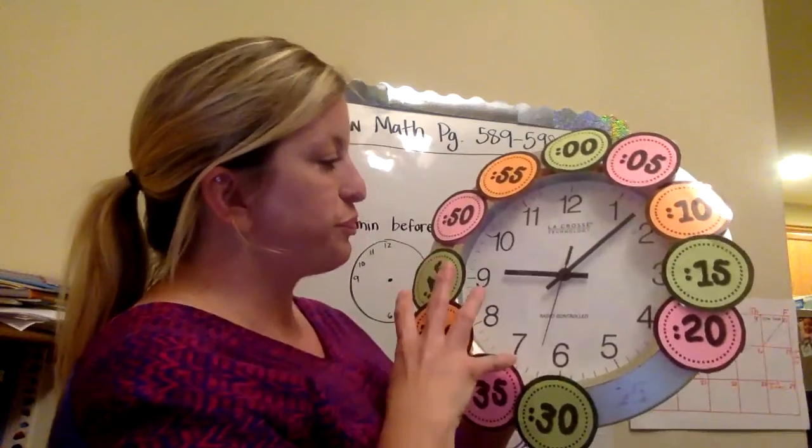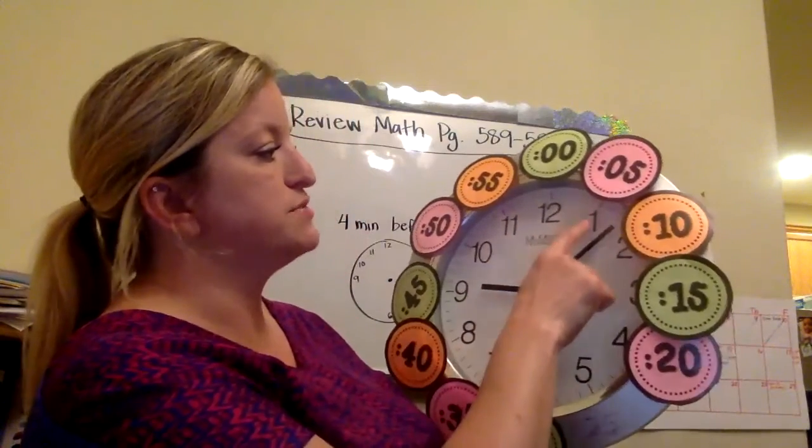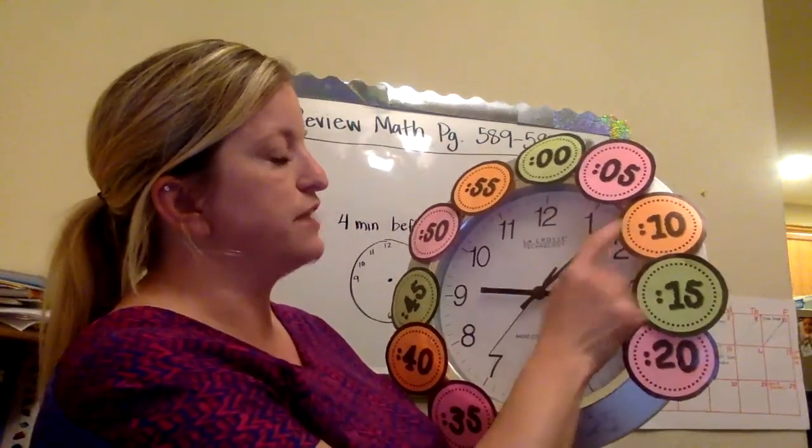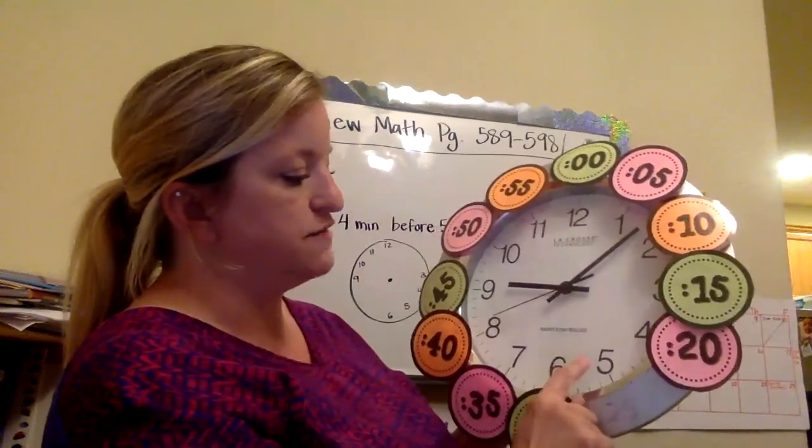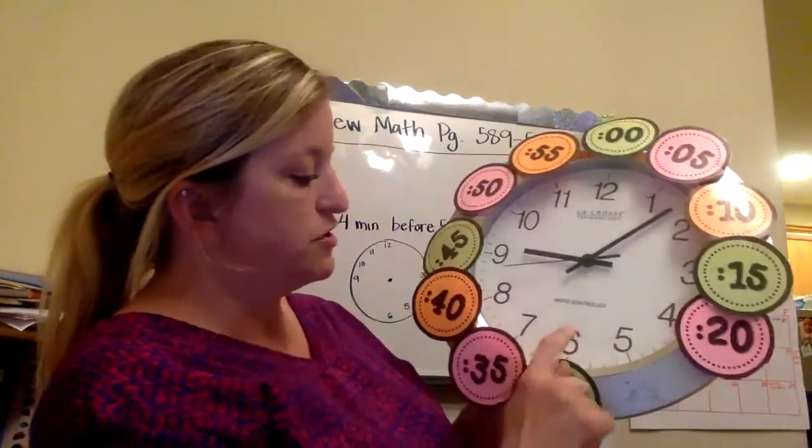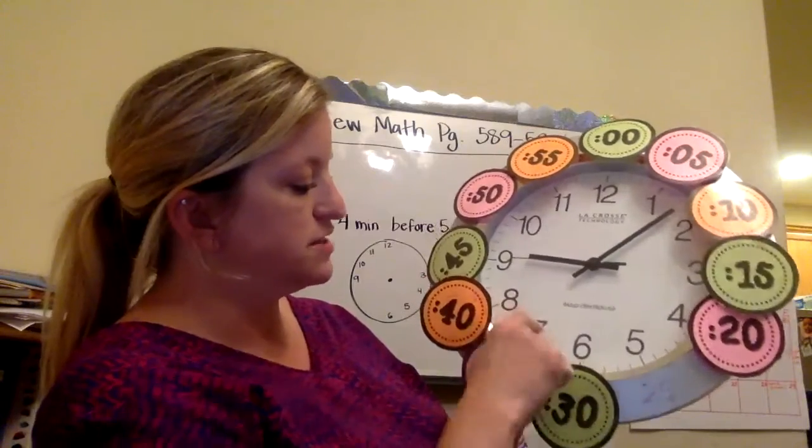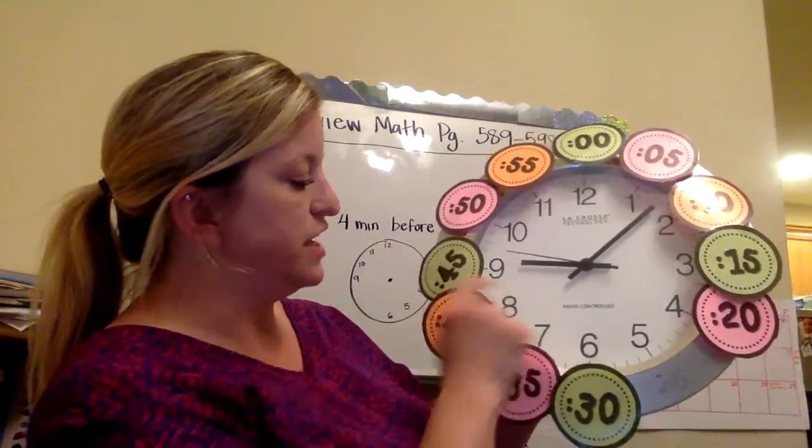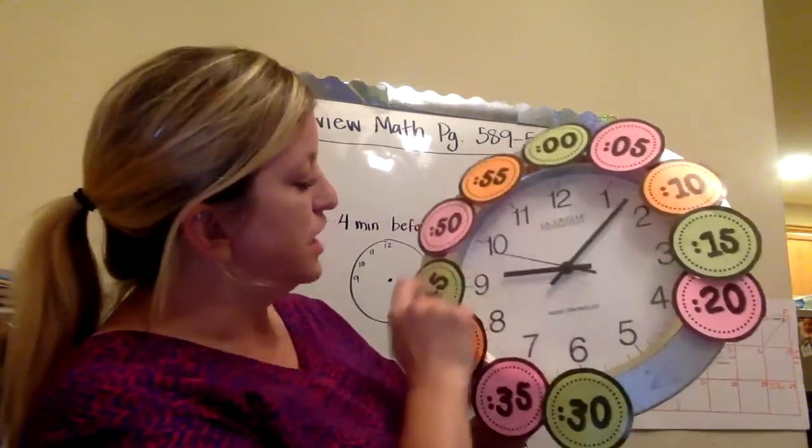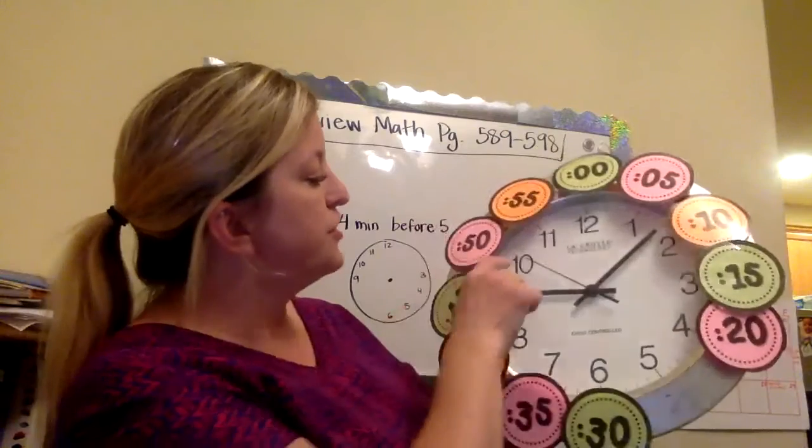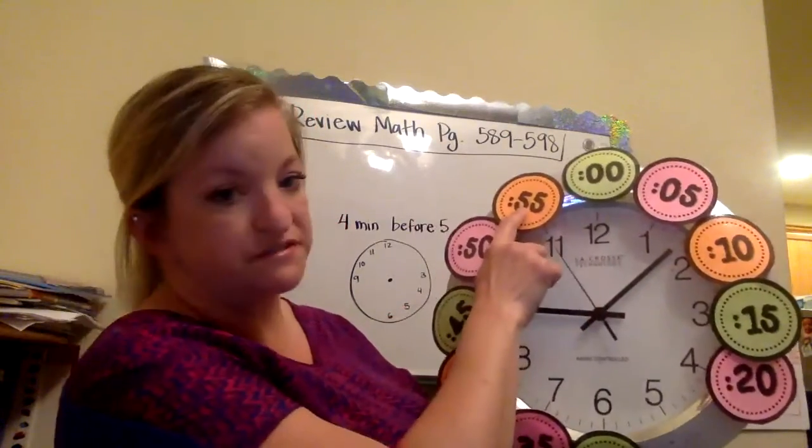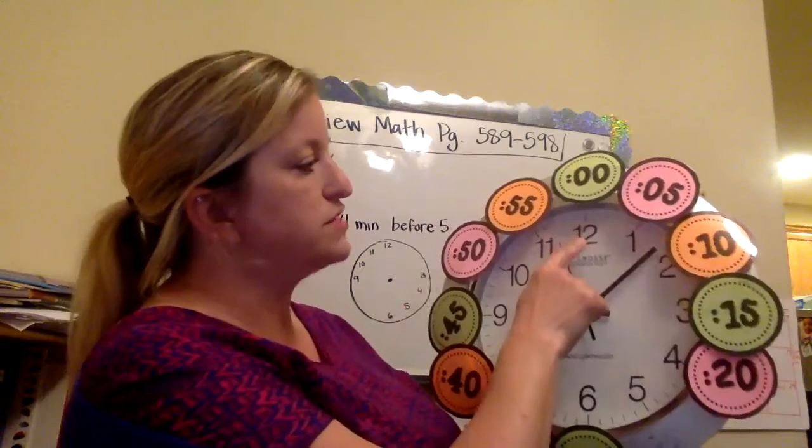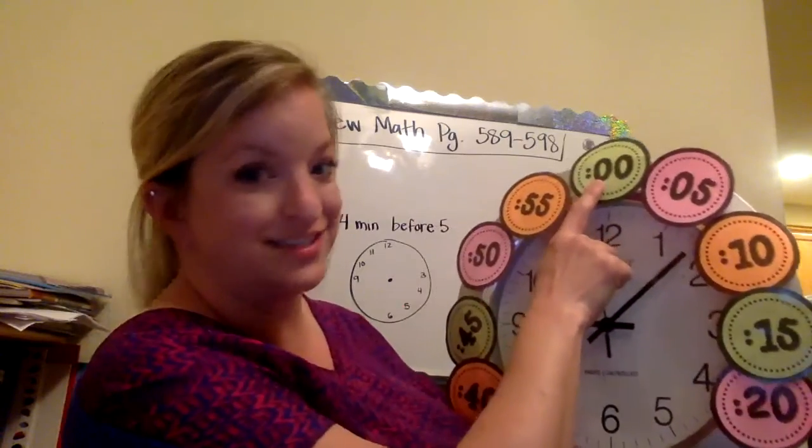So if you notice, 1 times 5 is 5, 2 times 5 is 10, 3 times 5 is 15, 4 times 5 is 20, 5 times 5 is 25, 6 times 5 is 30, 7 times 5 is 35, 8 times 5 is 40, 9 times 5 is 45, 10 times 5 is 50, 11 times 5 is 55, and 12 times 5 is 60.